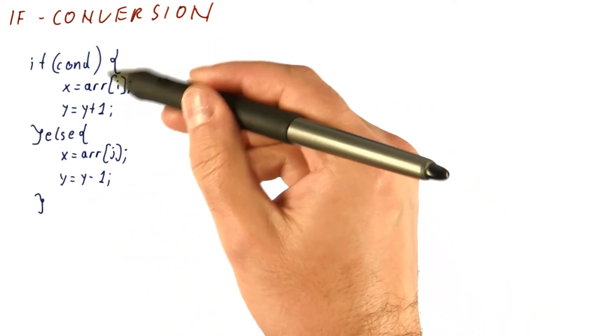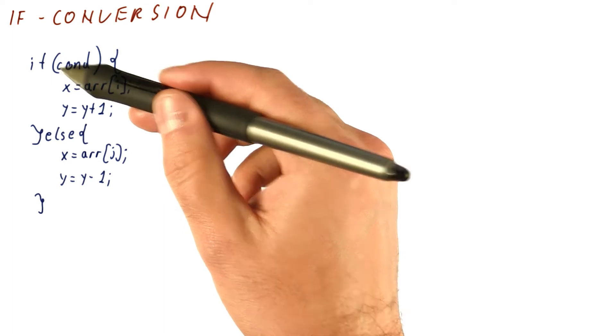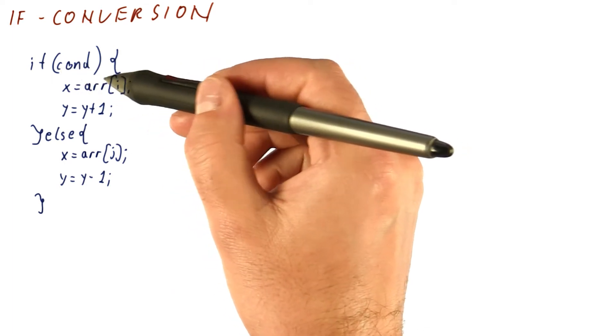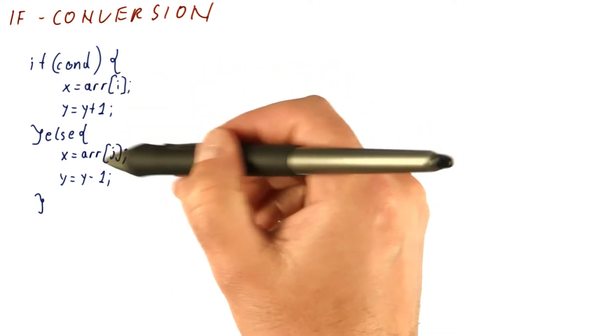Let's say we have a relatively small if and else here, where depending on the condition, x gets either the value from array of i or array from j, and y gets either incremented or decremented.